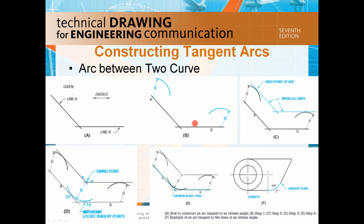Swing one radius from line A and one from line B as shown in step B. Now you draw two parallel lines parallel to line A and line B, and that's how you intersect that new swing point.